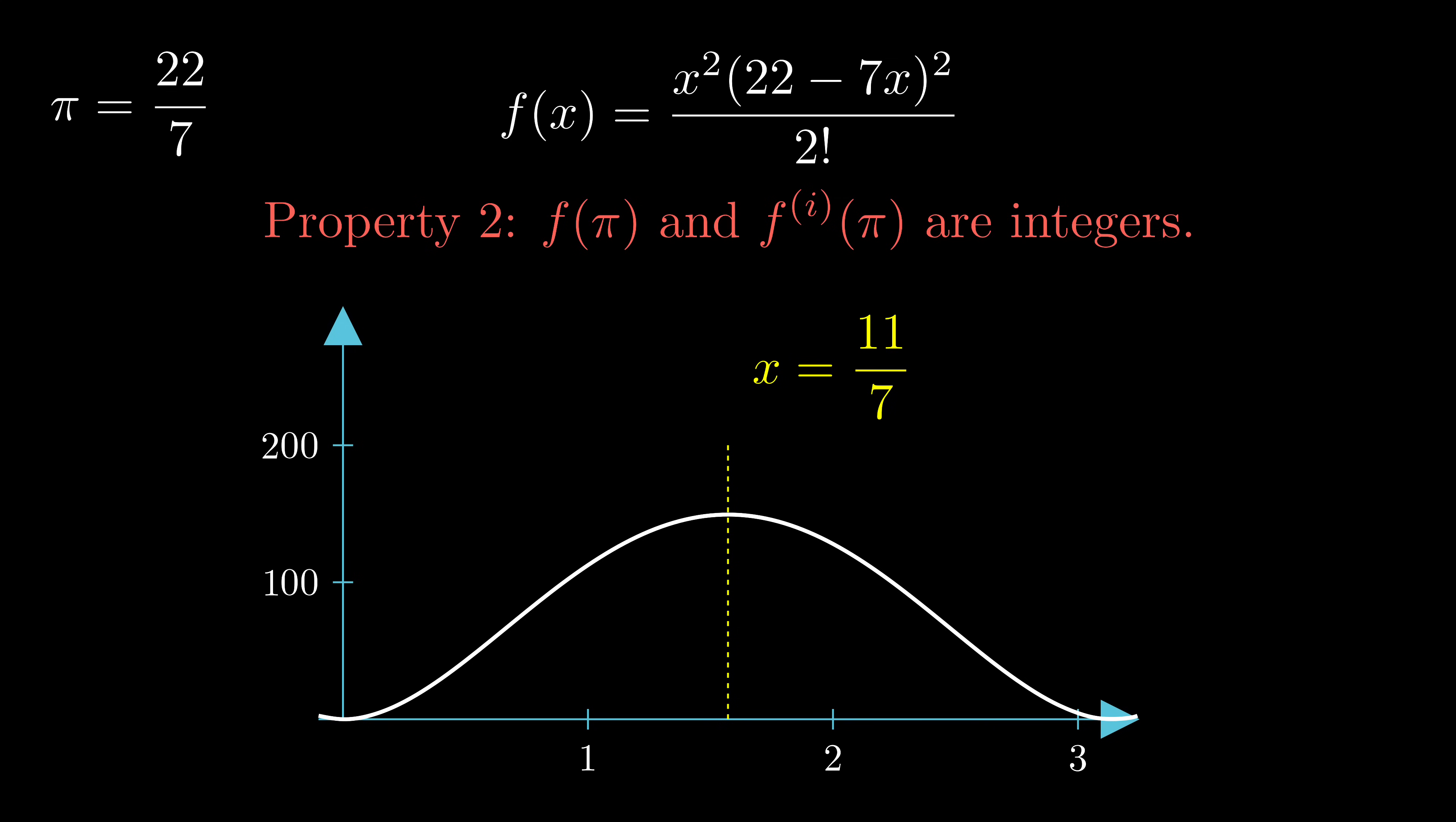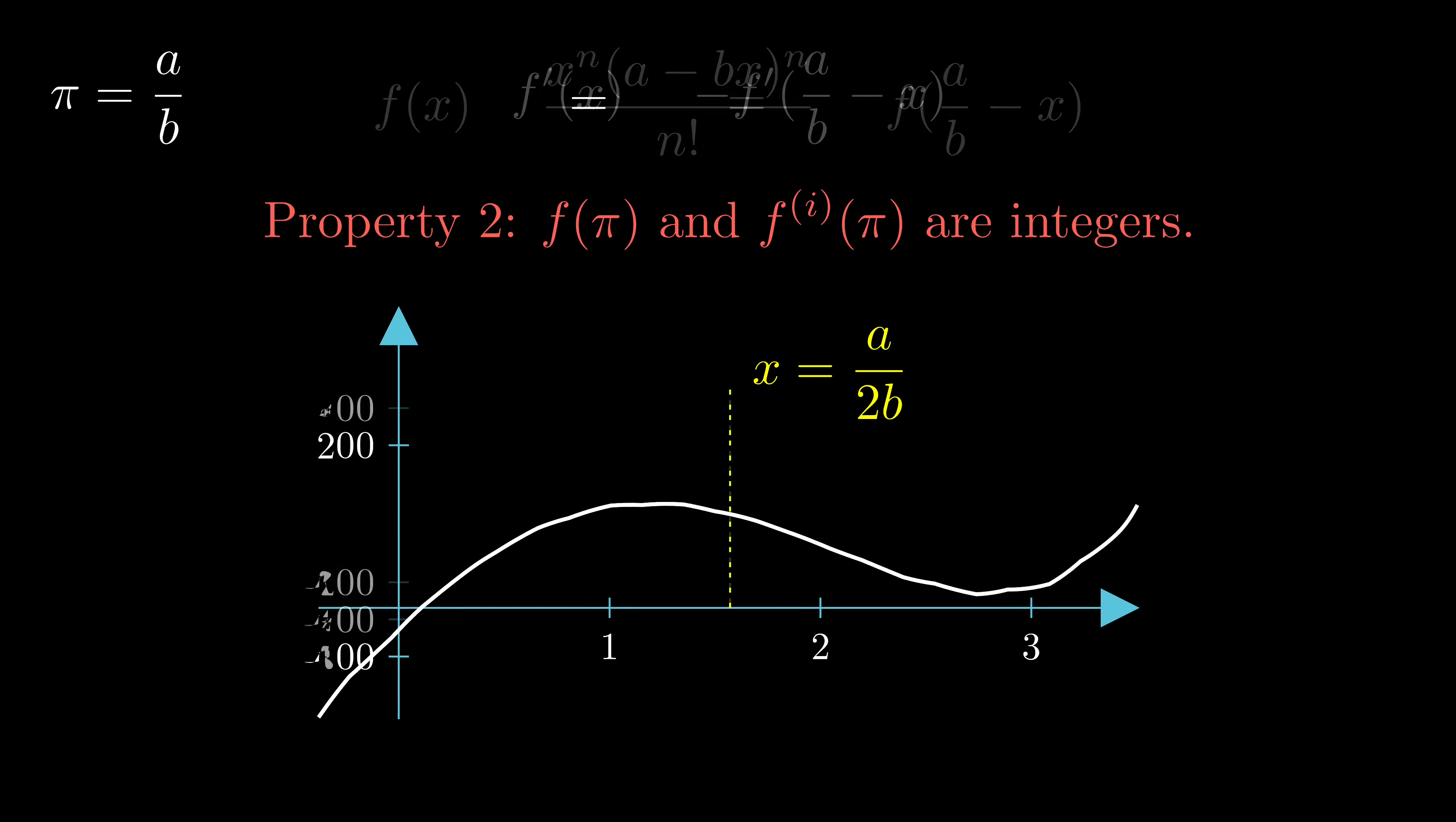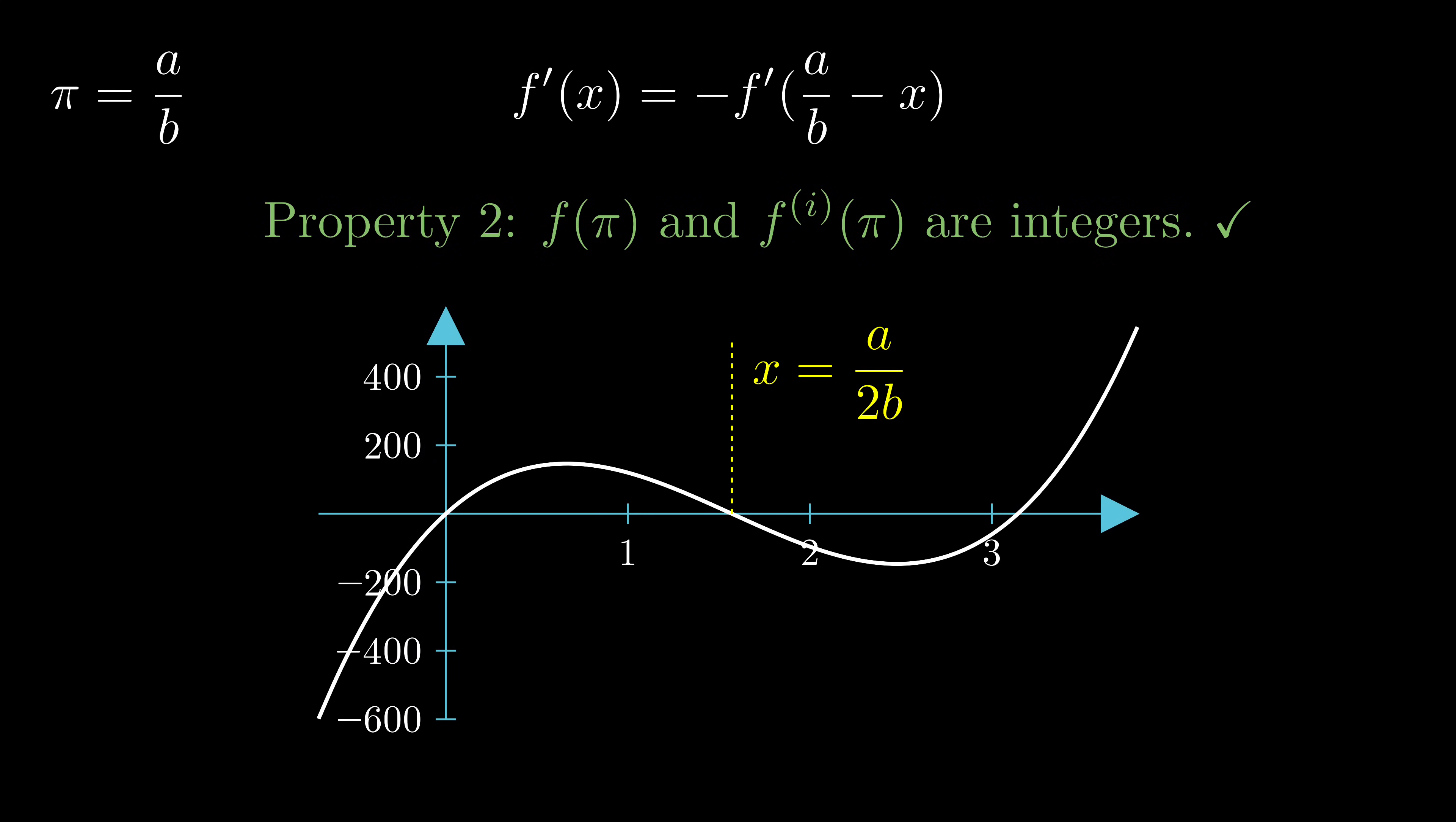And for the general case, the axis of symmetry is a over 2b. If we take the derivatives, signs may be flipped, but integers will remain integers. This concludes our proof of the second property.